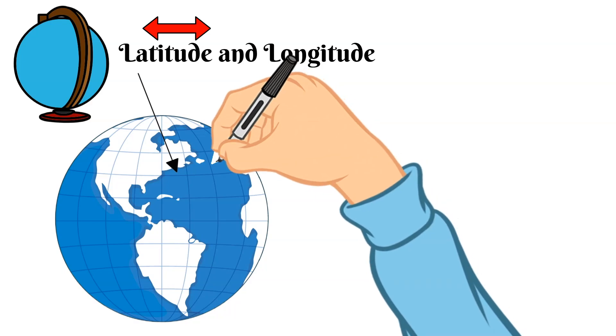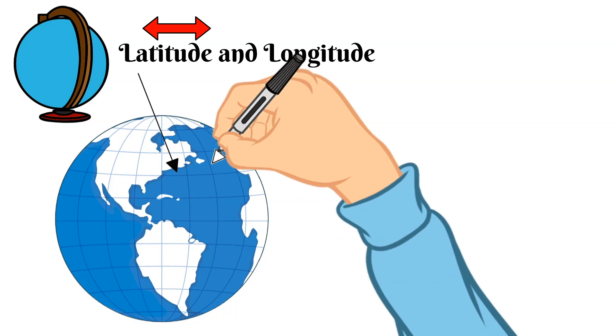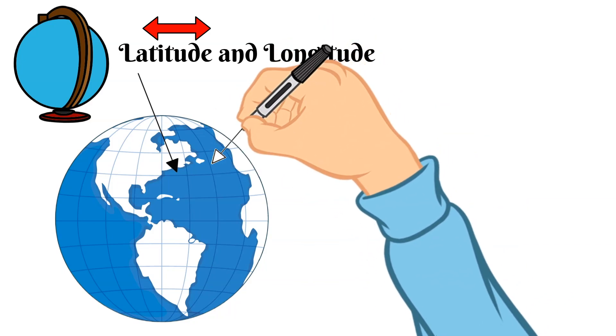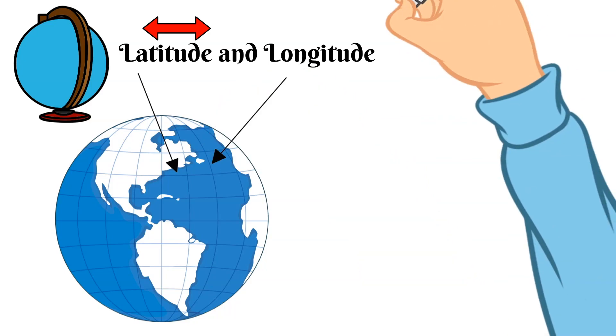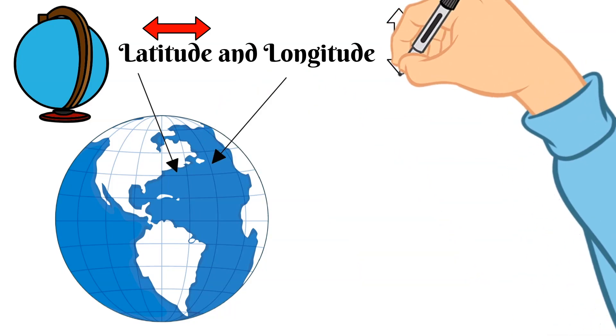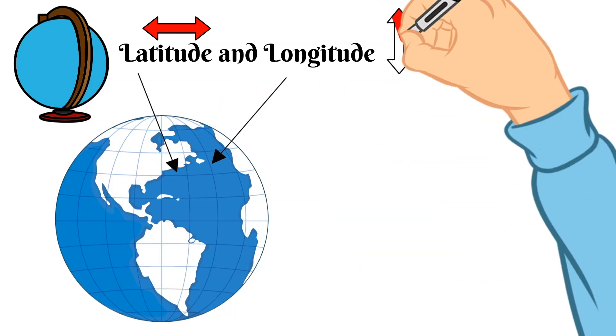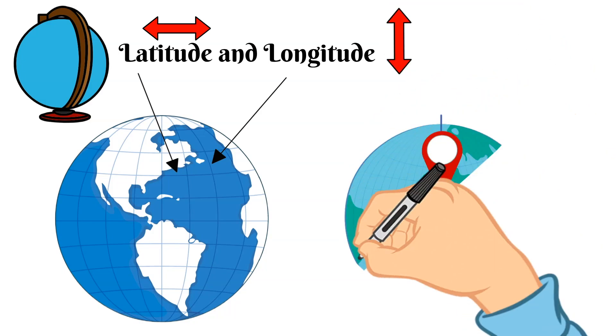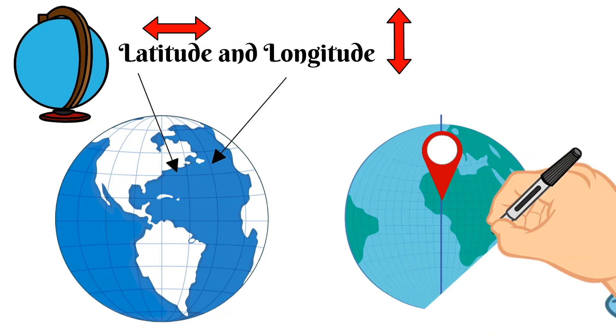Now longitude lines on the other hand are the lines that run north and south and are the length and a way to remember this is longitude longitude. So any place on the whole earth can be found by this system of latitude and longitude.